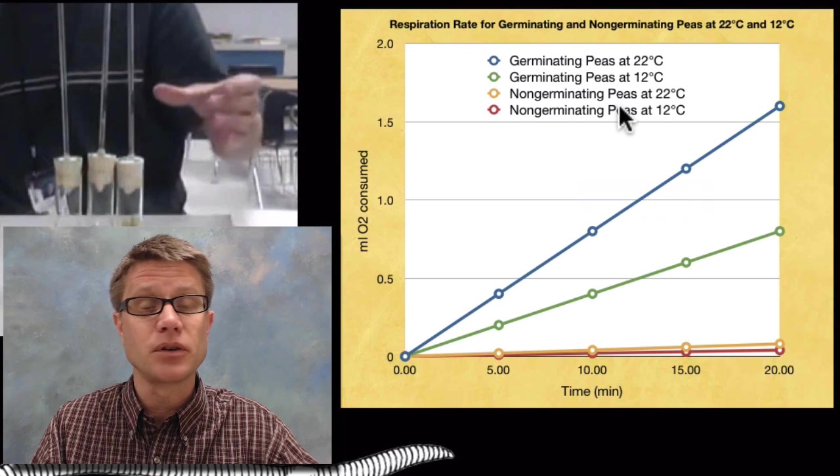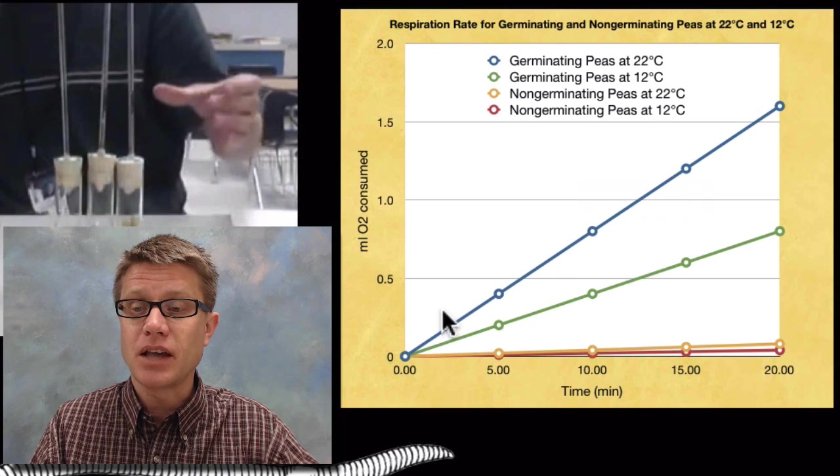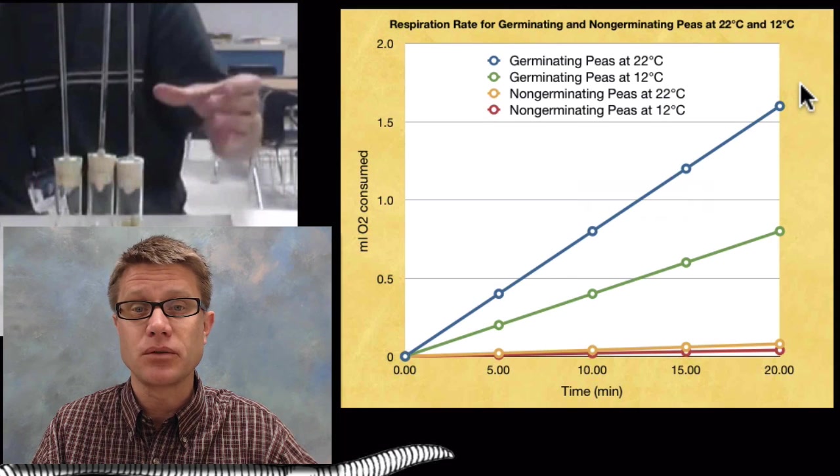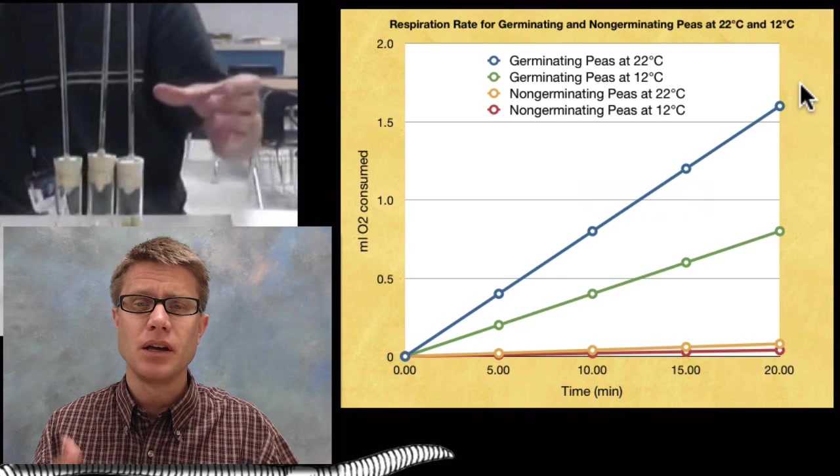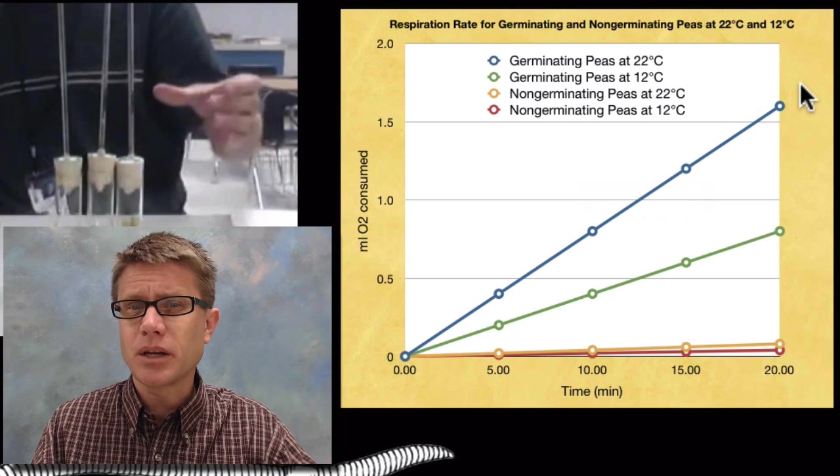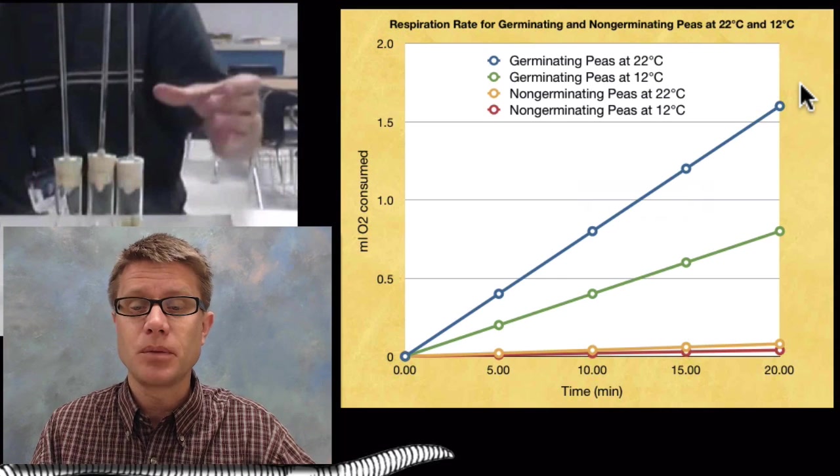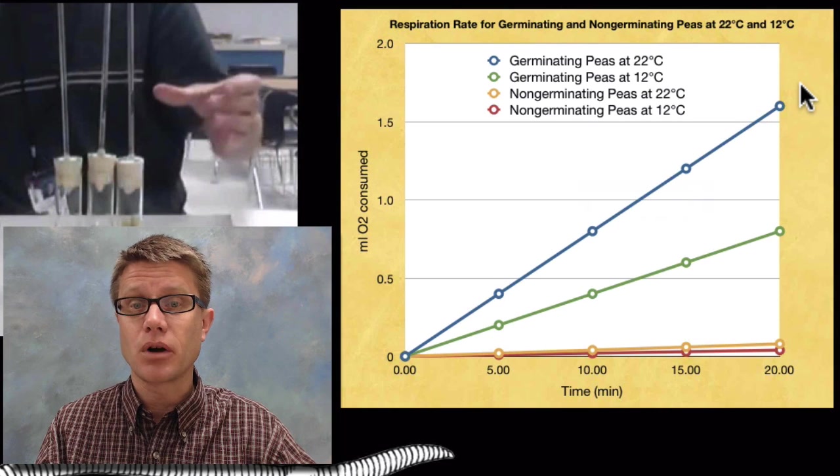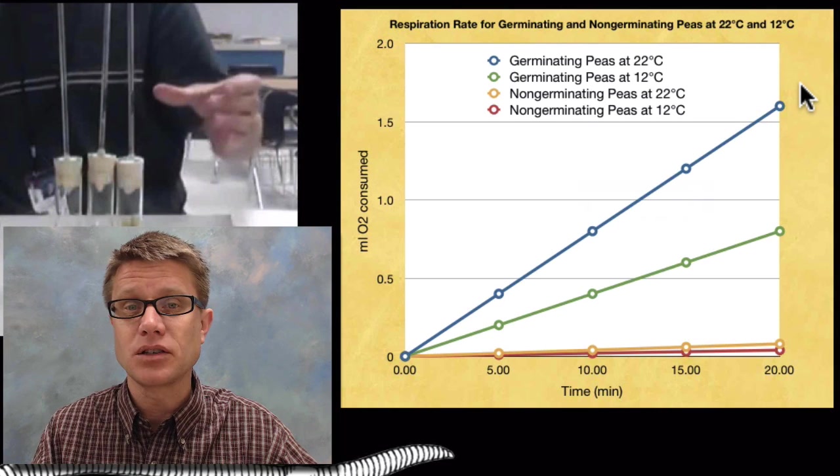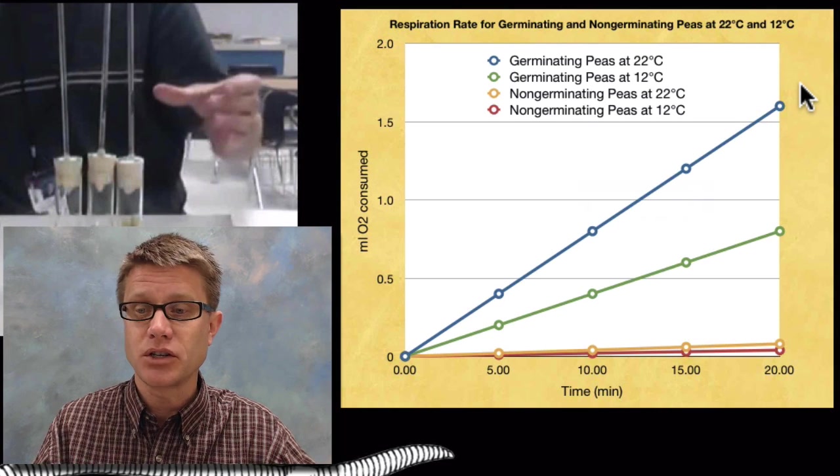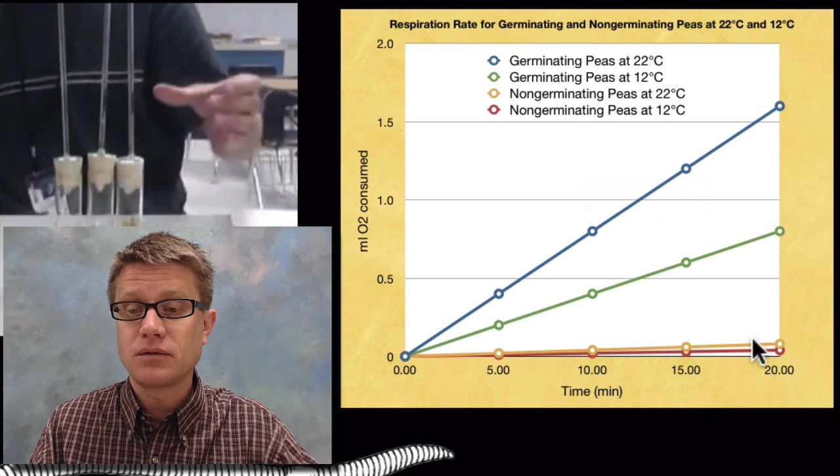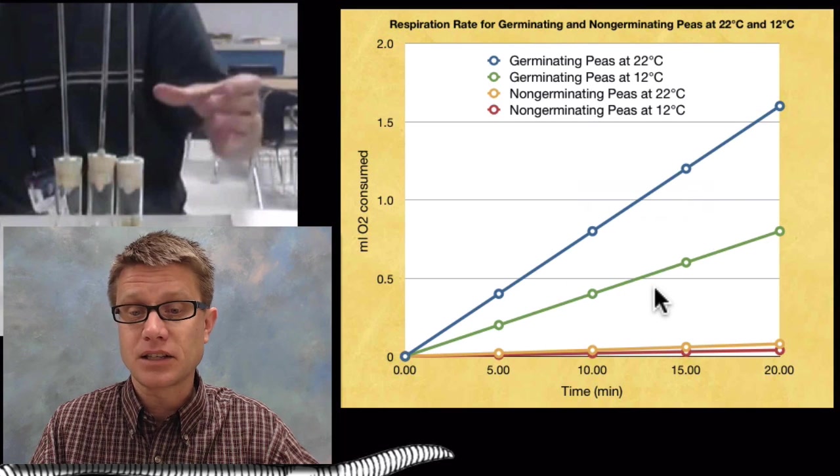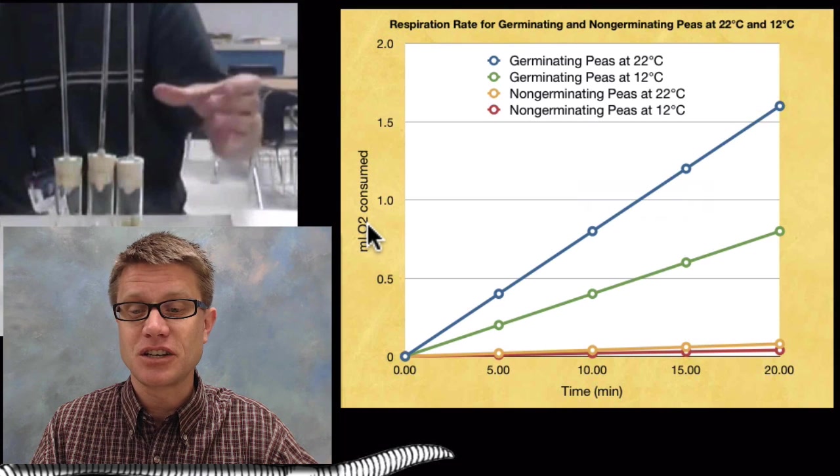What we'll find is as you increase temperature, respiration rate is going to increase. The reason why is all the molecules are bouncing around more quickly, more likely to have reactions. Also, if it's a germinating pea plant, germinating pea plants are going to require more energy. They're growing, so that's going to require more oxygen. We're going to see a faster rate of respiration. Remember you can always calculate the rate by figuring out the slope of this line, and that's going to be milliliters of oxygen consumed per minute.